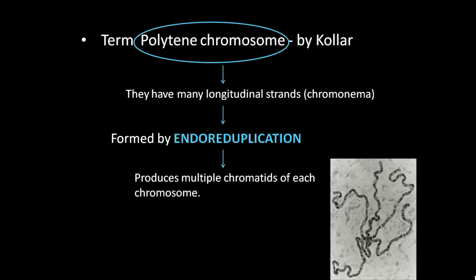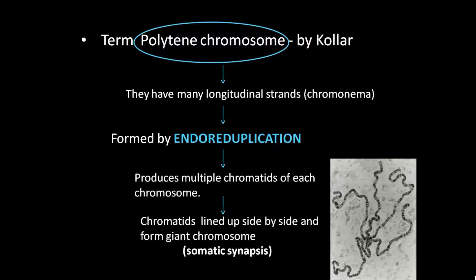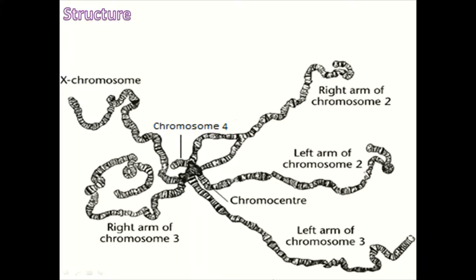Each chromatid will line up side by side and form this joined polytene chromosome. The chromatids line up side by side by a process called somatic synapsis, producing very long strands. These are linked by paracentromeric regions to create a single chromosome.